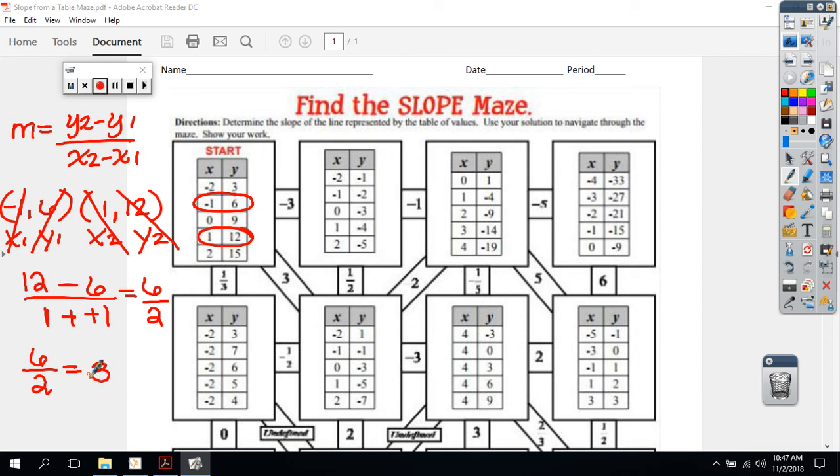So the slope for number 1 is 3. And you can see that the maze either goes to the right, negative 3, kind of diagonally to positive 3, or down to 1/3. So the answer was positive 3, so we would shade that one. Let me get my highlighter. I would highlight this path.